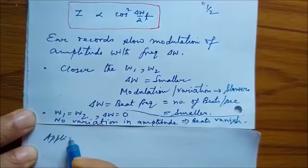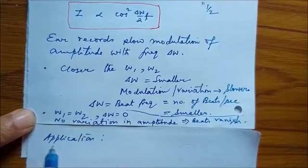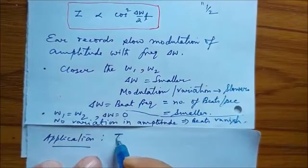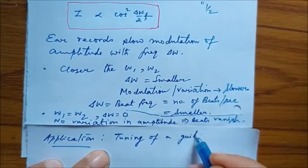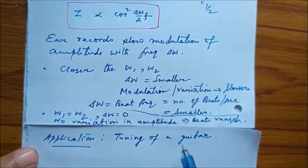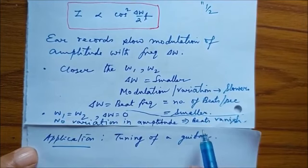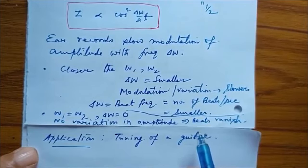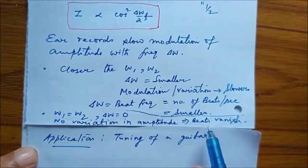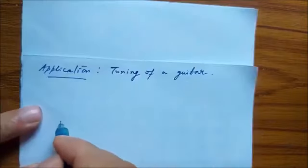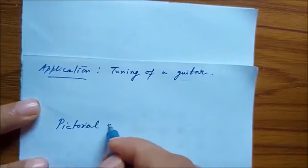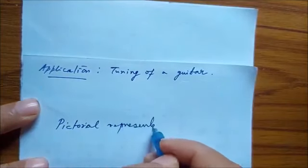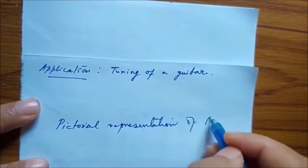We will study applications in a separate lecture. One application is the tuning of a guitar or musical instrument, done by listening to beats. If beats are present, the two strings are not in tune. If beats vanish, the two strings produce the same frequency and they are tuned. We will now give a graphical or pictorial representation of beats.